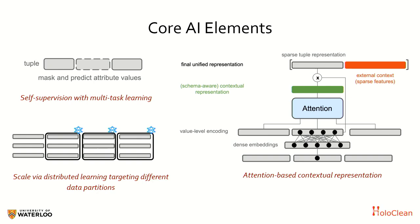Once we build that representation, we augment it with more explicit features — for example, violations of integrity constraints, domain knowledge, and so on. We then have a unified representation that we push to upper layers for inference and a variety of tasks, such as regression, classification, or error detection.